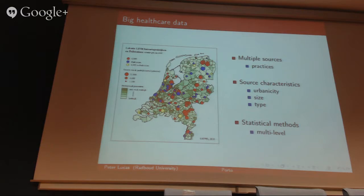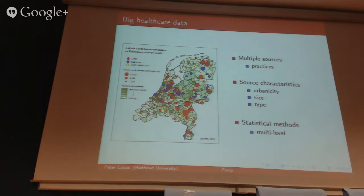We're dealing with data from different practices, so there's something we have to take into account. We're dealing with different areas — variance in urban versus rural settings across different regions. Size of practices, type of practices — it could be a standard family practice or a health center. Those practices vary from site to site, and we have to come up with special statistical methods to cope with this variance.